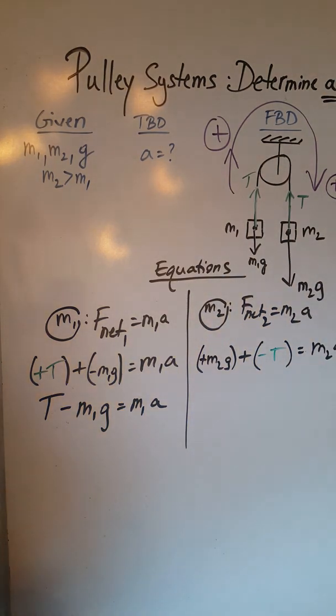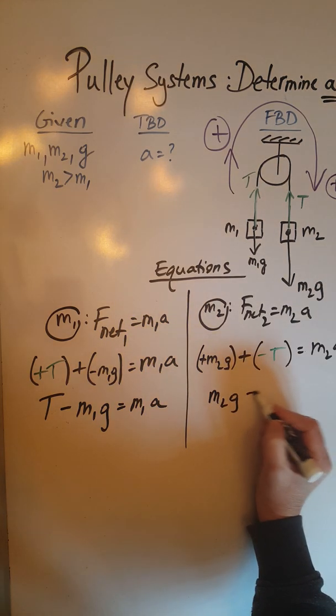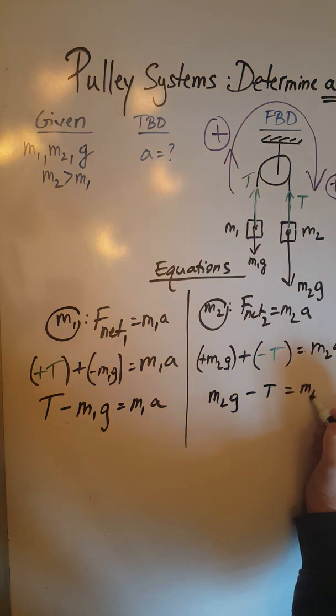When we simplify this vector equation we are going to have M2G minus T equals M2A.